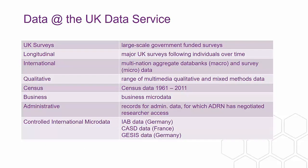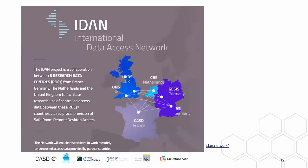Another way of describing what we hold: UK surveys, longitudinal data, international data, qualitative data, census, business and administrative data, and controlled international microdata. We hold in our safe room secure access data from the IAB in Germany, from CASD France, and from GESIS from Germany, accessible via our membership in the International Data Access Network — a project of six research data centres from France, Germany, Netherlands, and the United Kingdom, facilitating research use of controlled access data between these RDCs.